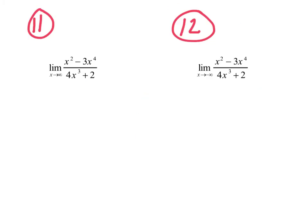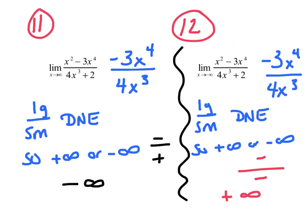Problems 11 and 12 are on your own — pause it, then play back to check. For 11: large over small, does not exist. Plugging in infinity: top gave negative, bottom gave positive — so negative infinity. For 12: large over small, does not exist. Plugging in negative infinity: negative infinity to the fourth is positive times negative is negative on top; negative infinity cubed times 4 is negative on bottom. Negative over negative — positive infinity.